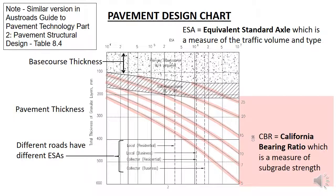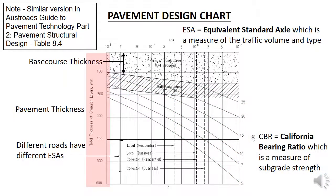The strength of the subgrade determines the depth of pavement required. A weak subgrade requires a thicker pavement to distribute traffic loads to a level that can be borne by the subgrade. A stronger subgrade would not need as thick a pavement, as it has a higher bearing capacity and could withstand higher loadings without deforming or slipping. Therefore the pavement does not need to distribute traffic loads as much and can be thinner. The total thickness of granular layers is on the y-axis and tells you how thick the pavement needs to be to distribute traffic loads to a suitable pressure at the subgrade.